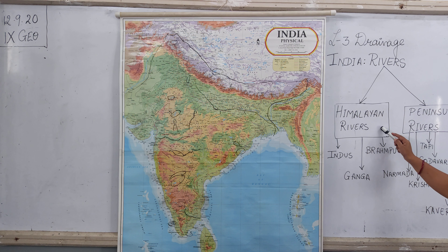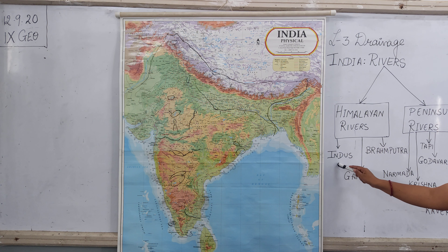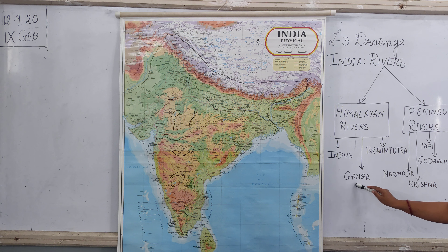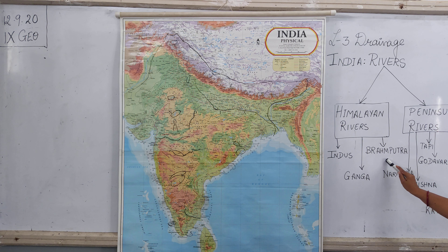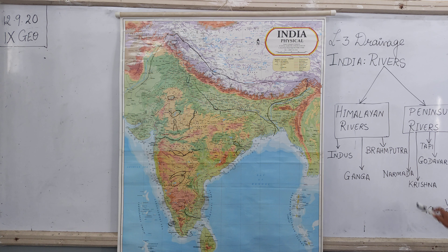The Himalayan rivers are divided into three drainage patterns: the Indus river system, the Ganga river system, and the Brahmaputra river system. Whereas the peninsular rivers are divided into five parts: Narmada, Tapi, Godavari, Krishna, and Kaveri rivers.